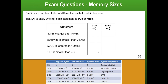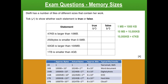Now let's take a look at memory sizes. We're going to calculate which is larger or smaller with some true/false statements. I've put a little guide here. We're going to use approximate bytes — just to the thousands — because it's easy to work out quickly. It's not asking us to work to the power of two. First: 47 kilobytes is larger than 10 megabytes — true or false? One megabyte equals 1,000 kilobytes, so 10 megabytes would be 10,000 kilobytes. Is 10,000 kilobytes bigger than 47 kilobytes? Yes, so this statement is false.